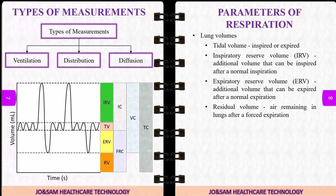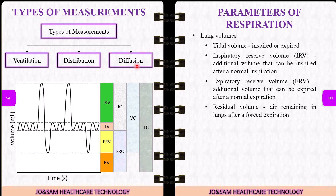There are three types of measurements of pulmonary function: ventilation, distribution, and diffusion. Ventilation indicates how much volume of air moves. Distribution indicates how much airflow is in the lungs. Diffusion indicates how O2 and CO2 are exchanged.